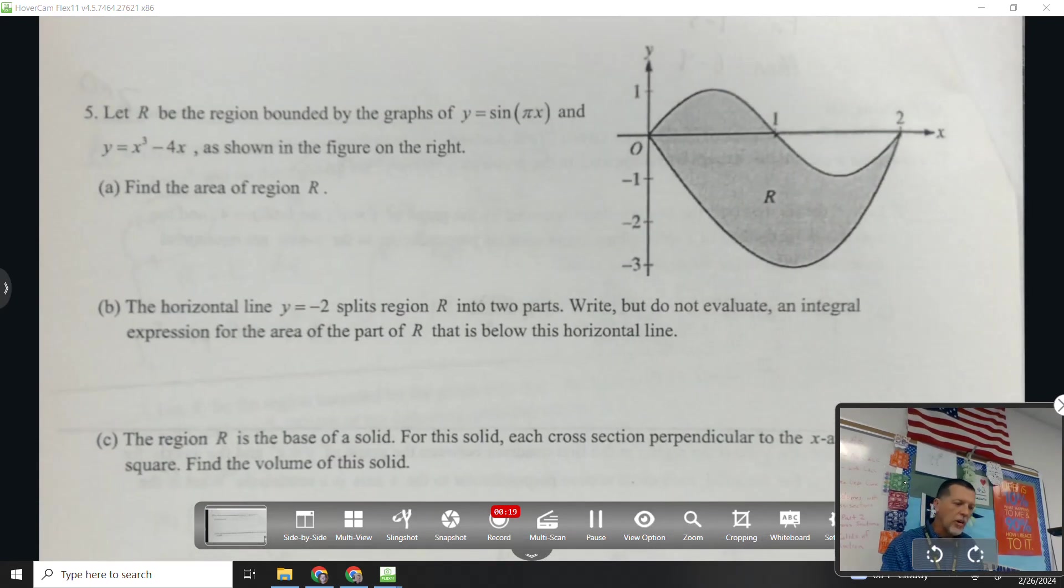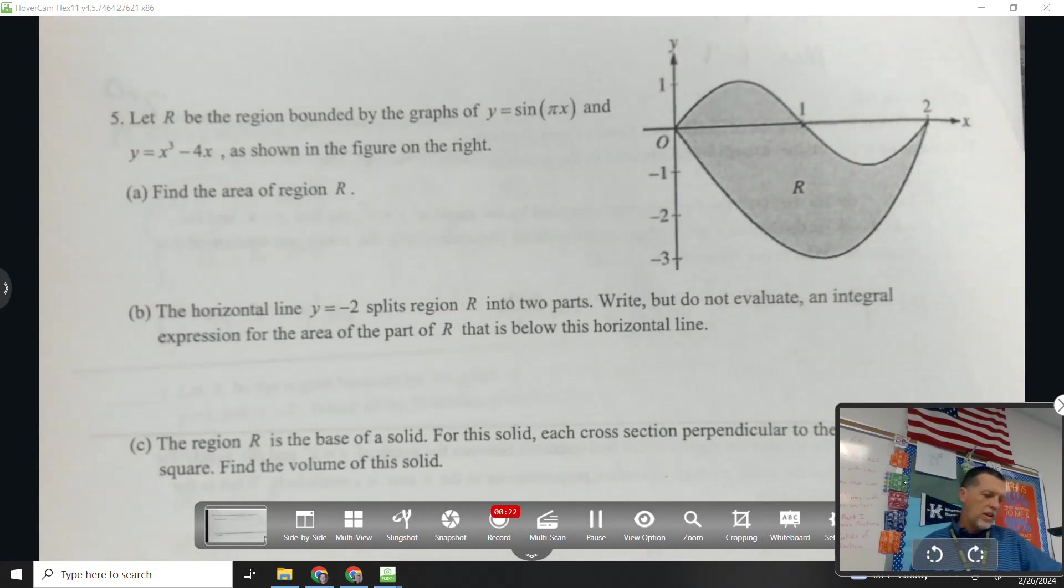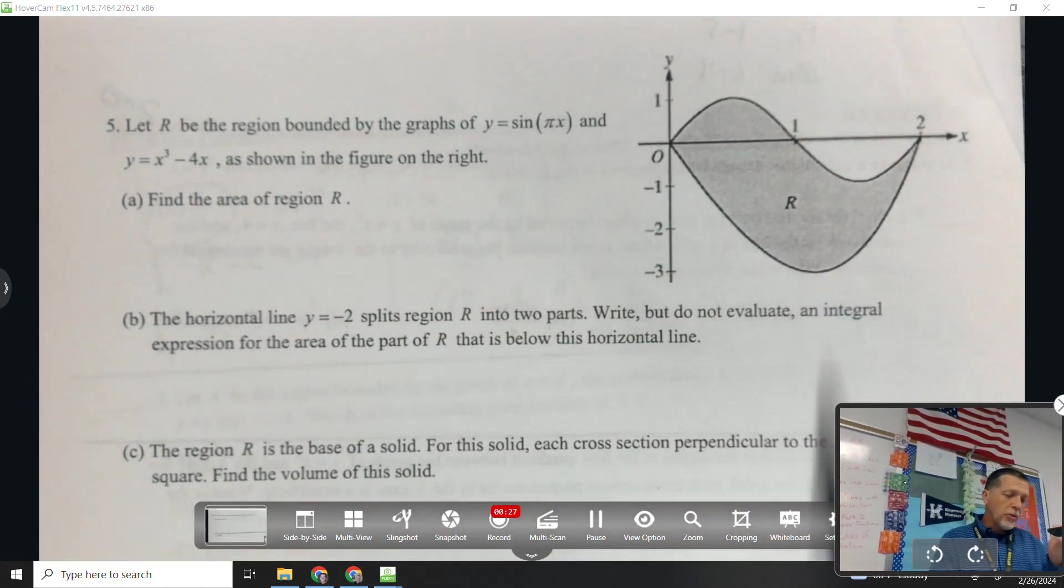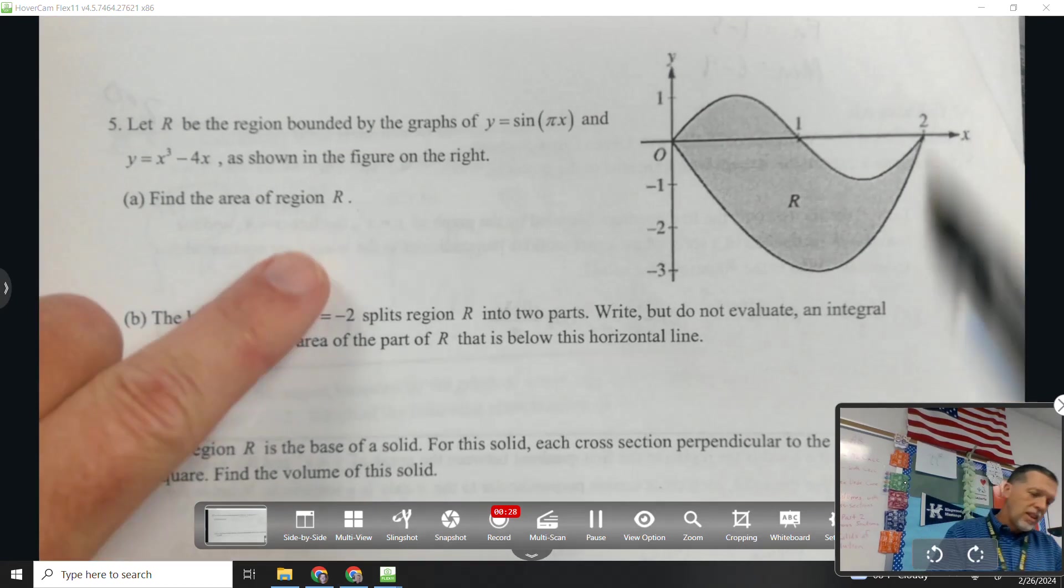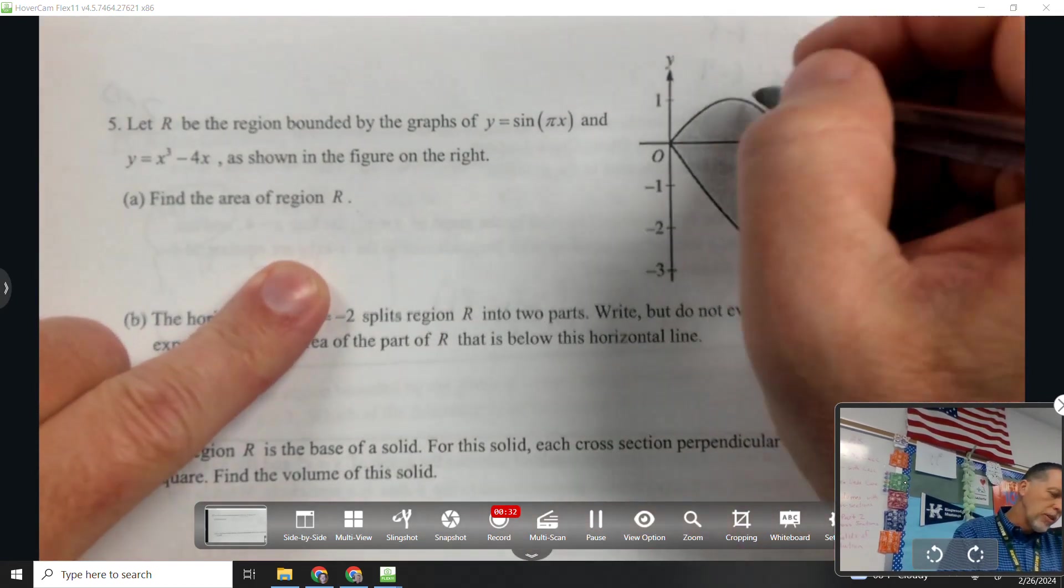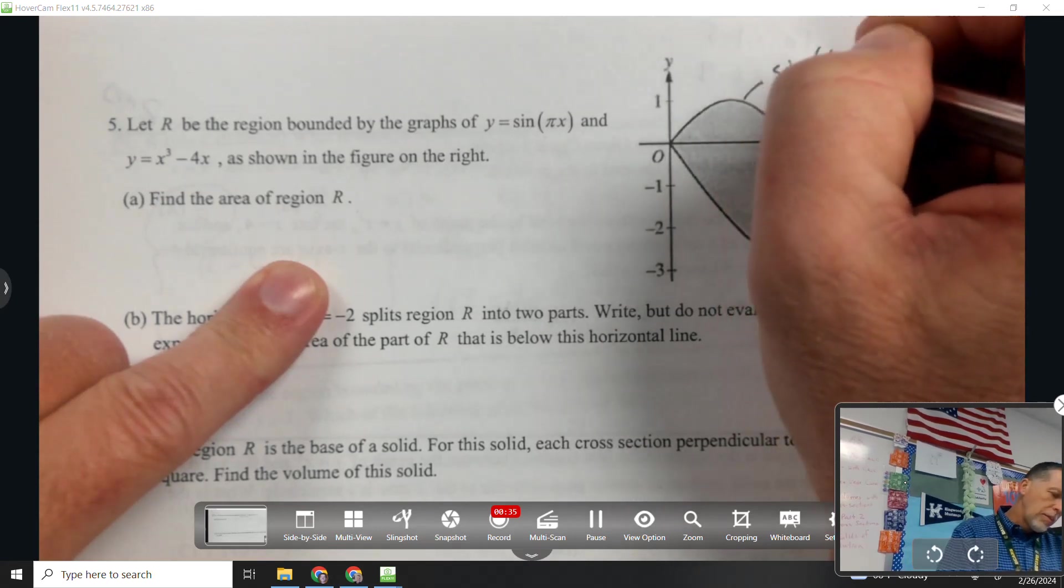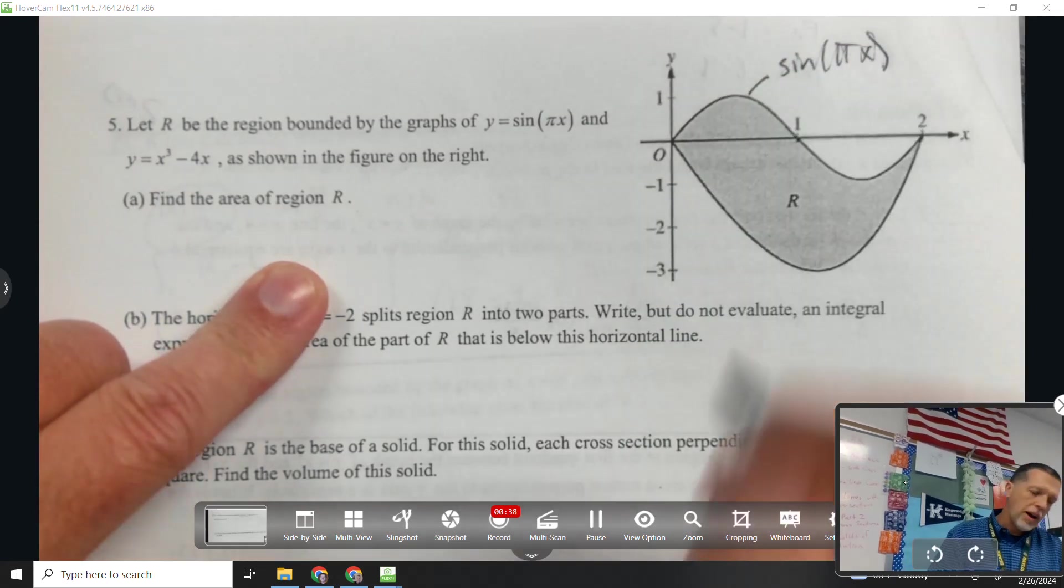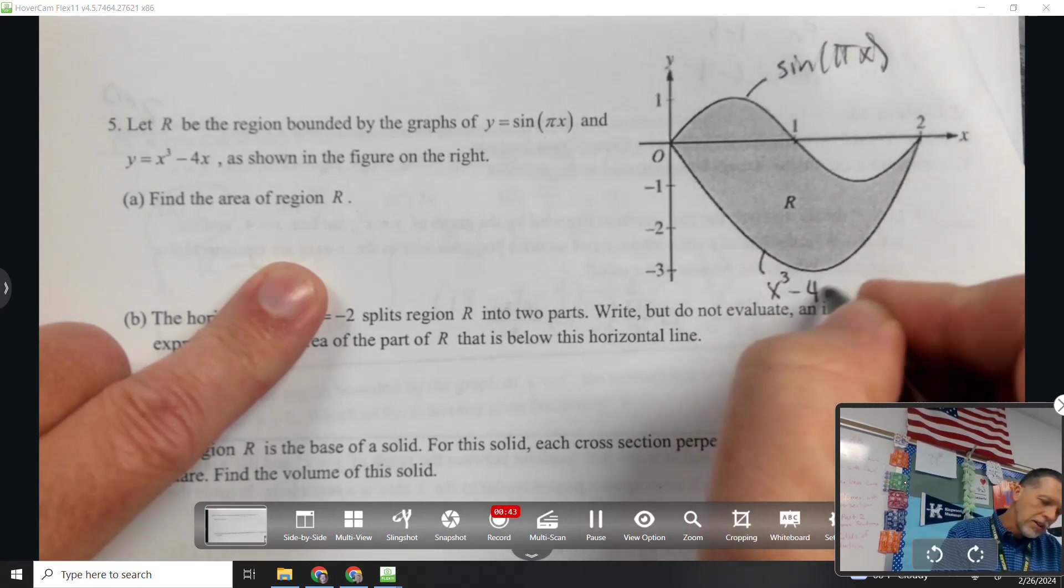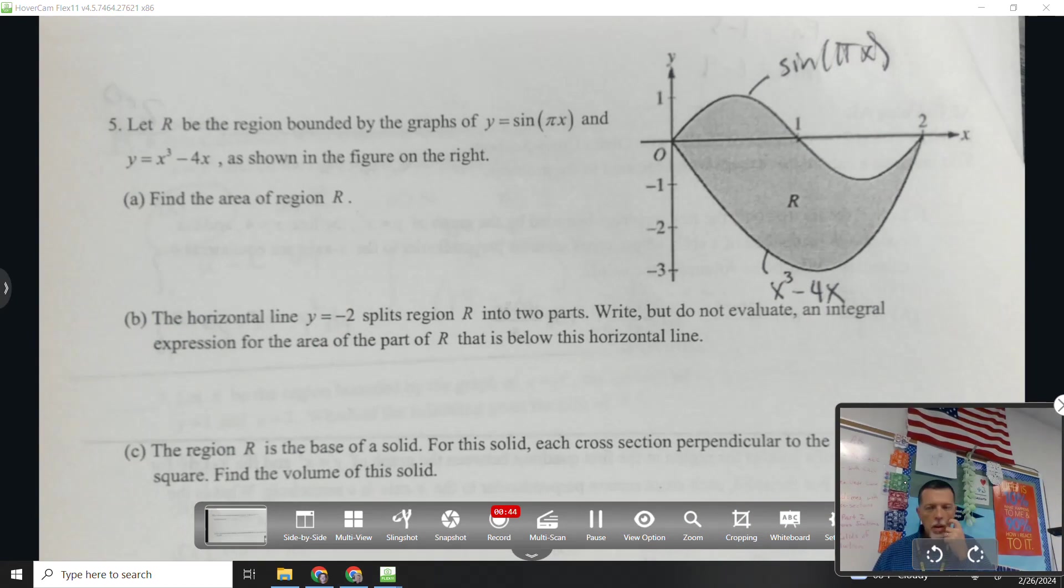I'm guessing it's a calculator problem because it doesn't say not to use a calculator. So I could use a calculator to figure out which one's which. But that sure looks like a sine wave, and I know the sine of 0 is 0, so I'm pretty sure that top one is sine of pi x, and that bottom one would be x cubed minus 4x. If you didn't know that or couldn't tell that, you put them in the calculator and see which one's which.